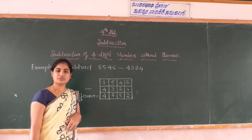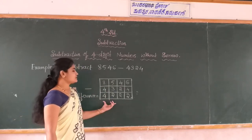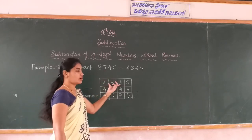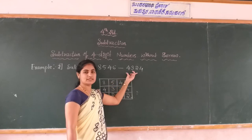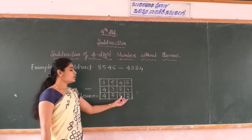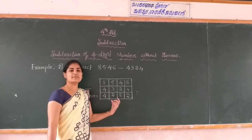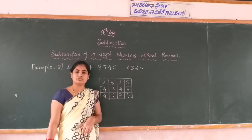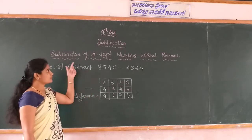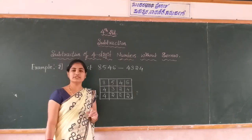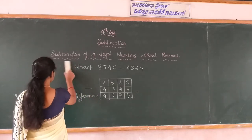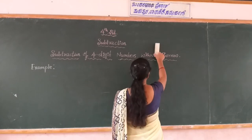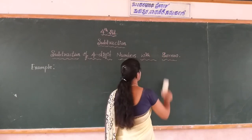This is the subtraction method for four digit numbers. First write the bigger number on top and the smaller number below. Start the subtraction from the ones place. This is the method for subtraction of four digit numbers without borrow. Next we go to the subtraction of four digit numbers with borrow.